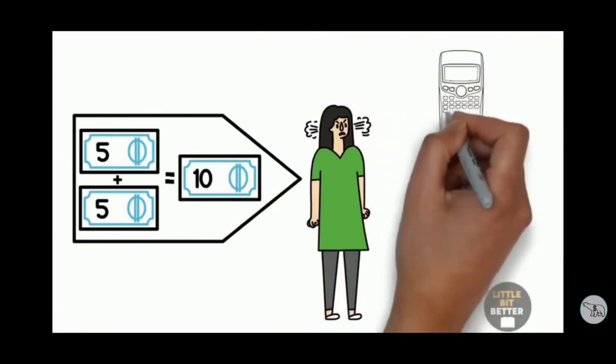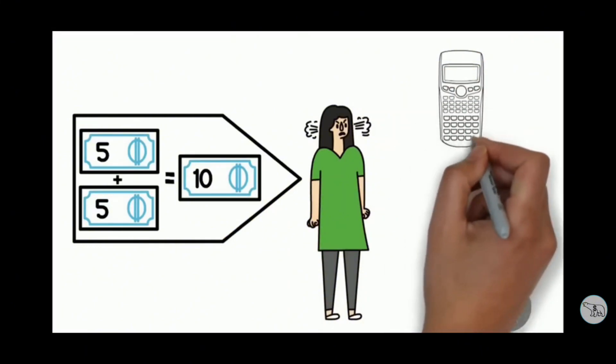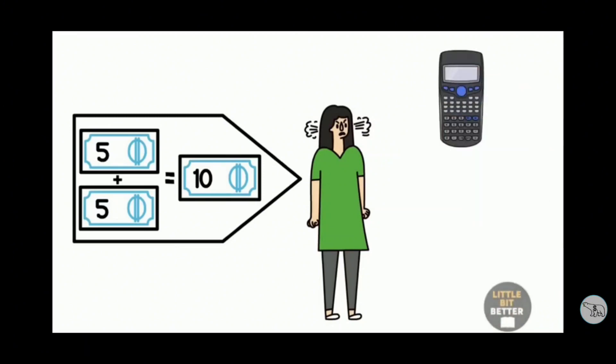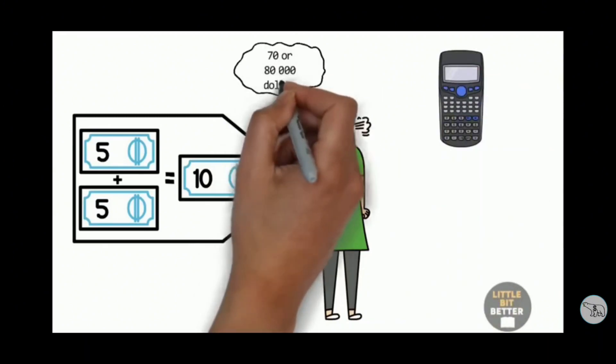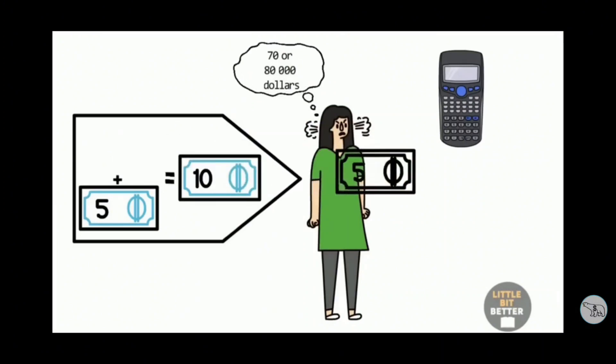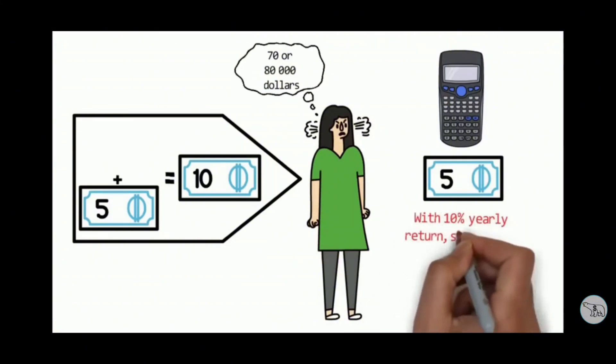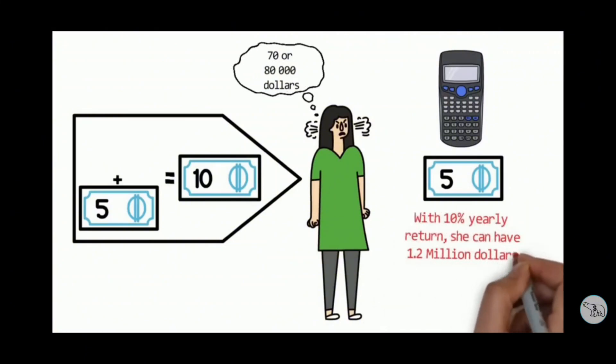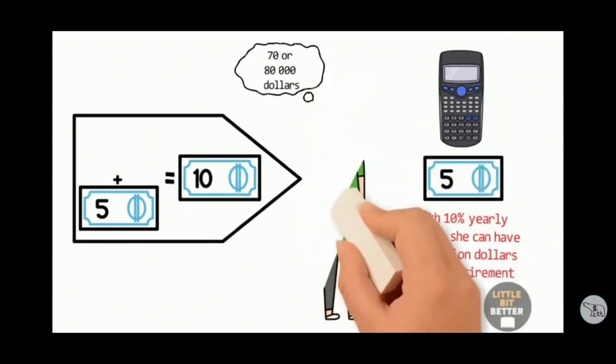David asked the lady to guess how much money she could save by her retirement if she started investing half of that $10. She thought it would maybe be around $70,000 or $80,000. After some calculations, the lady was shocked to find out that if she invested $5 a day with 10% yearly return, she could have $1.2 million by her retirement. Her daily coffee and muffin were costing her $1.2 million.